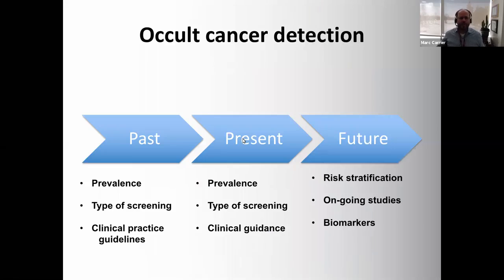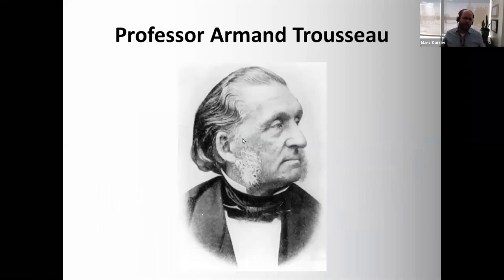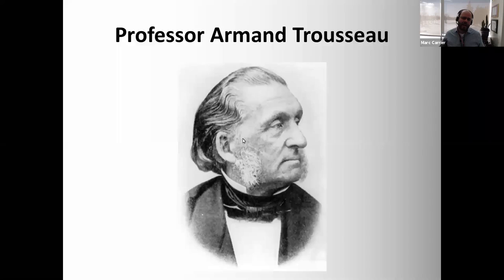We wouldn't be able to talk about occult cancer detection in patients with VTE without showing a picture of Professor Armand Trousseau, who put cancer-associated thrombosis on the medical map. He's not the first to describe the relationship between cancer and thrombosis, but he is one most often referred to for having done so.